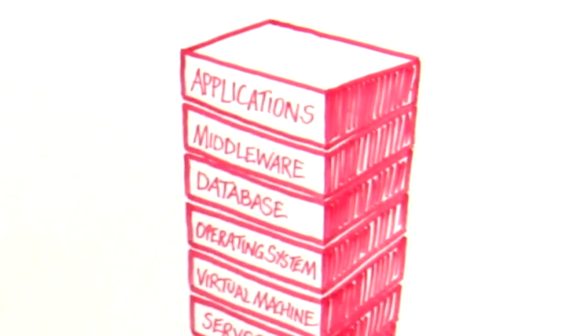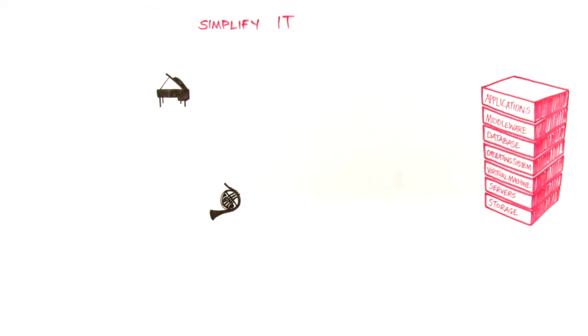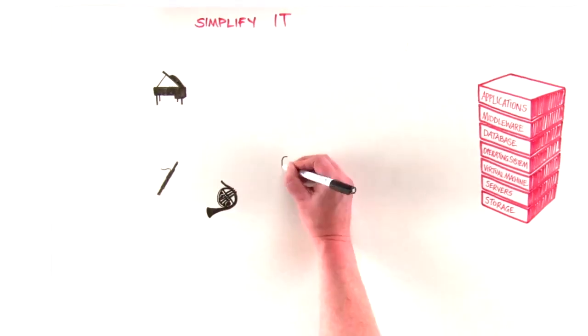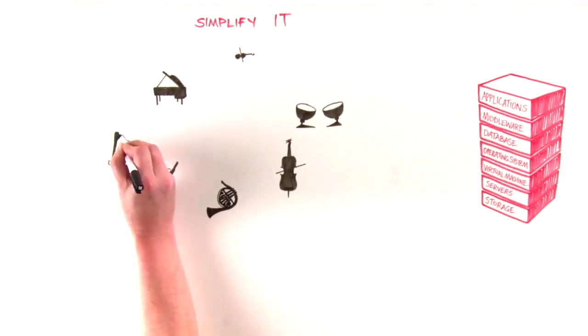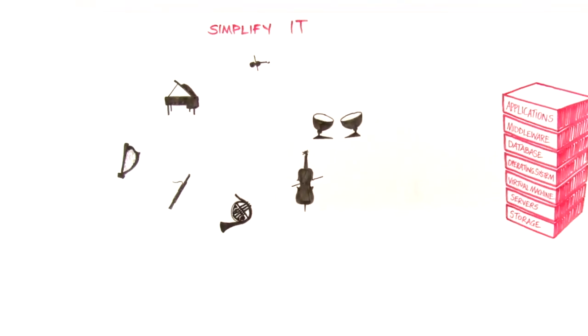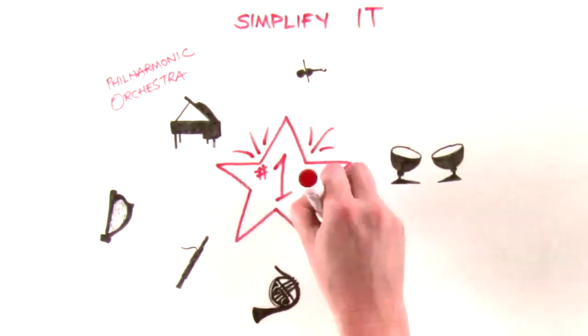Think of each part of this stack as a different part of an orchestra. Storage is the French horn, the database is the piano, the application is the oboe and so on. But this isn't just any orchestra. This is a Philharmonic Orchestra, the best orchestra in the world.